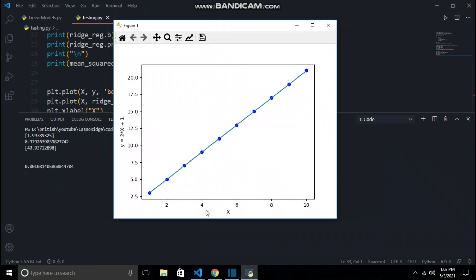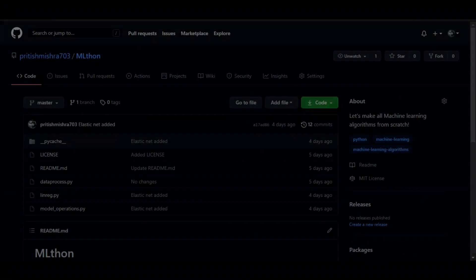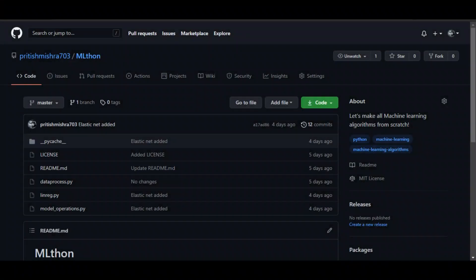The line perfectly passes through all the data points. Good. Now your task is to try this with lasso and elastic net. The whole code of today's video is available in this repository. This was it for today's video. I will see you next time. Till then, keep learning.